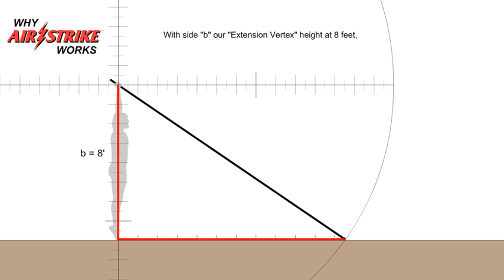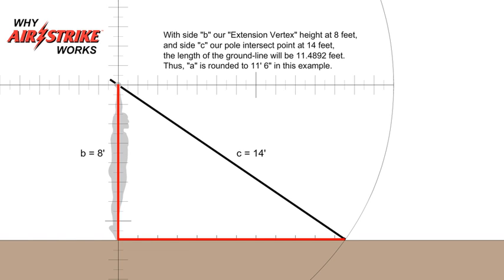With side b, our extension vertex height at 8 feet, and side c, our pole intersect point at 14 feet, the length of the ground line will be 11.4892 feet. Thus, a is rounded to 11 feet 6 inches in this example.